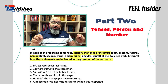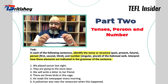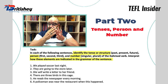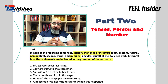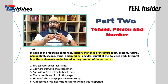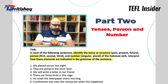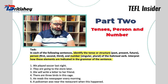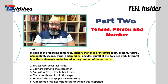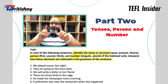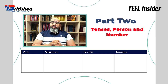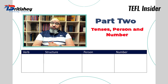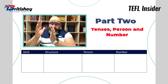Then interpret how these elements are indicated in the grammar of the sentence. So four things need to be covered: the tense or structure of the verb, whether it's first, second, or third person, and the number — singular or plural. What I advise you to do is draw a table where you have a column for the verb, a column for the structure or tense, a column for the person, and a column for the number.